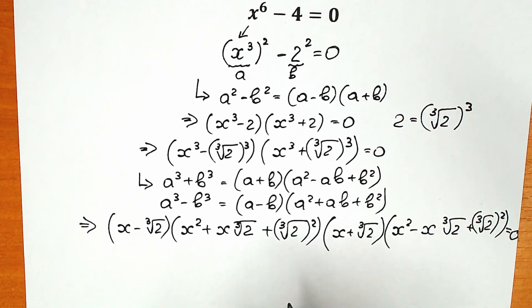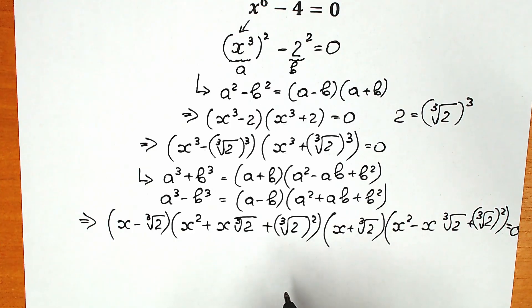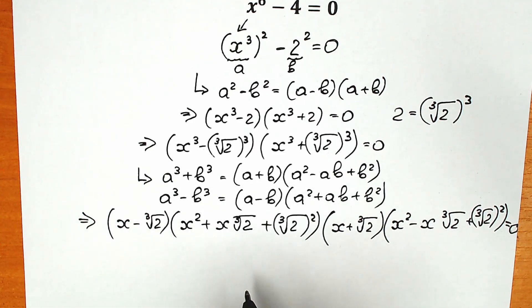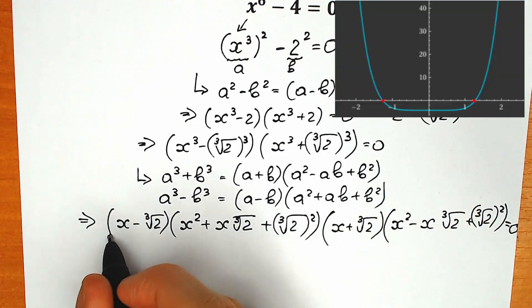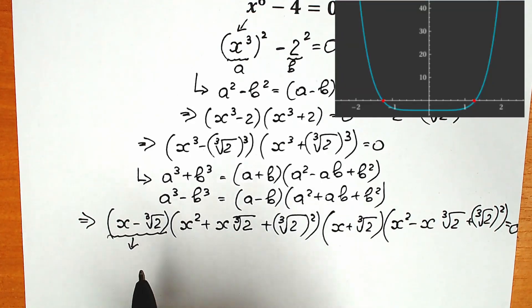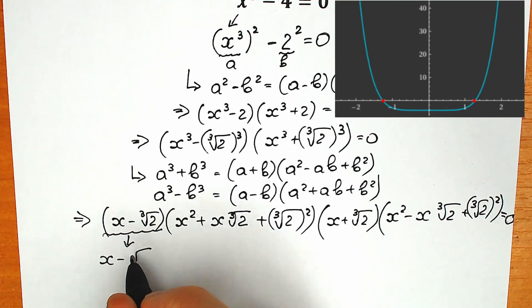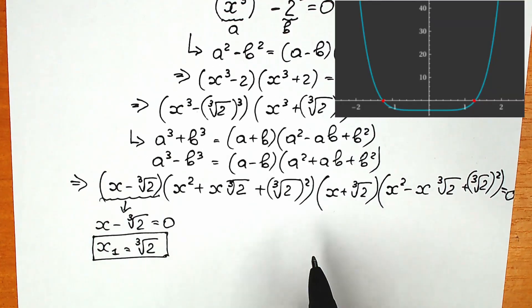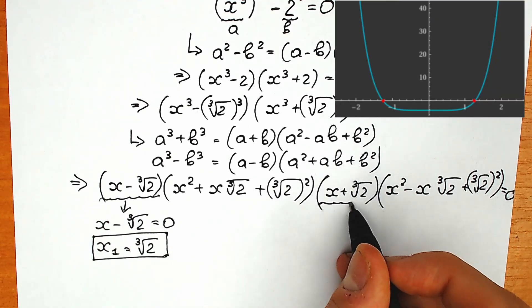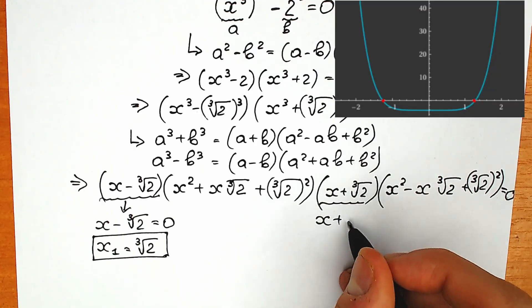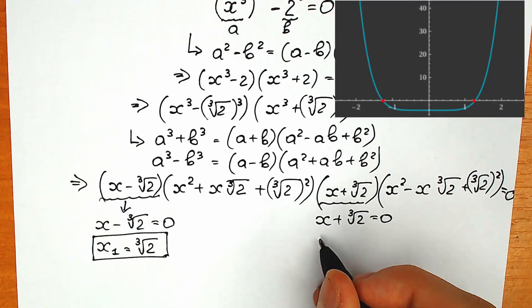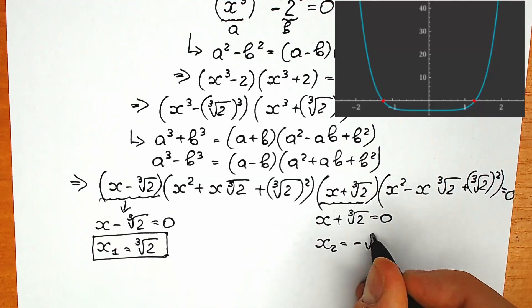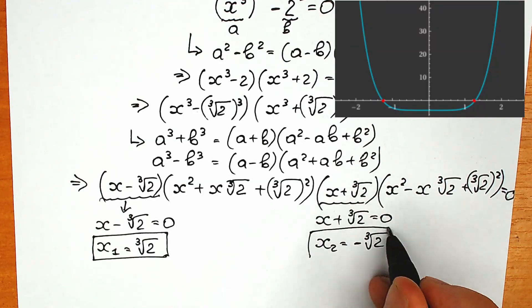A product of all these parentheses equals zero when each parenthesis equals zero. So from the first: x minus cube root of 2 equals 0, giving x₁ equals cube root of 2. From the second: x plus cube root of 2 equals 0, giving x₂ equals minus cube root of 2. These are our first and second roots.